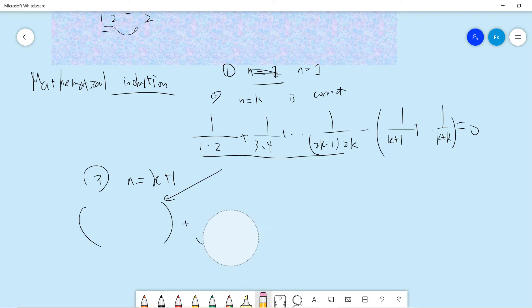So this term is 2k plus 1. Let me just write down. So plus 1 over 2k plus 1, 2k plus 2. And then minus this term. So now your k starts from what? Your k starts from k plus 1, right? So you get 1 over k plus 2, k plus 3, up to k plus 1 plus k plus 1.